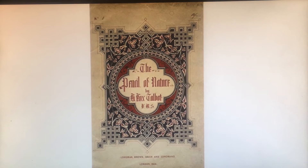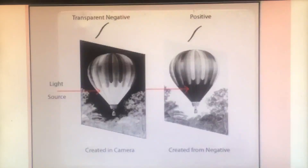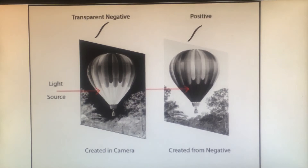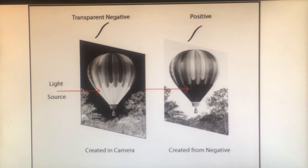Here's a copy of the cover of the first book illustrated with photographs, published in London in 1844 — kind of a big deal. Nobody had been able to reproduce images like that before. That image shows the tin-plate material they worked on. Here's your negative and the positive, created in the camera and then printed from the negative.